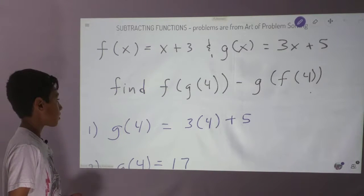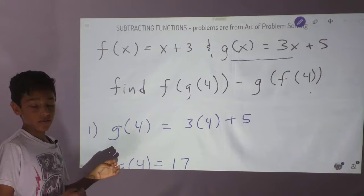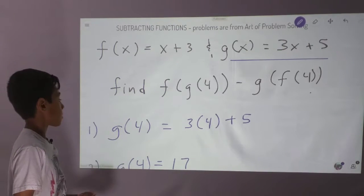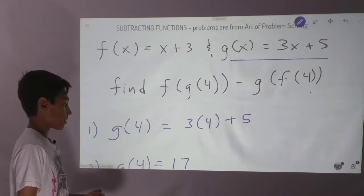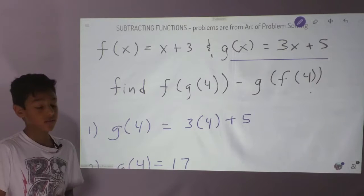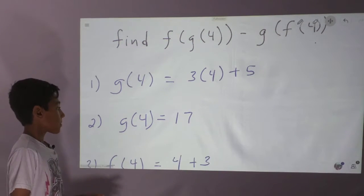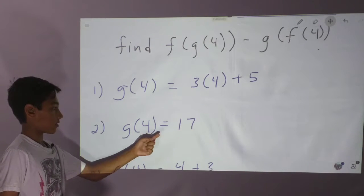So we can do that now. For g of 4, we plug in 4 for x, and we get g of 4 equals 3 times 4 plus 5. And 3 times 4 is 12, and 12 plus 5 is 17. So g of 4 equals 17.